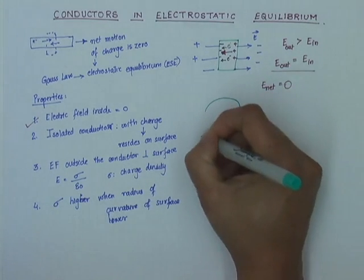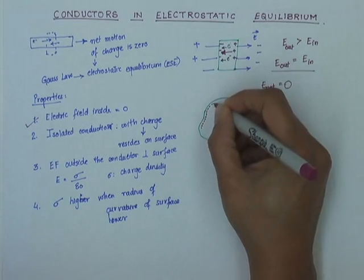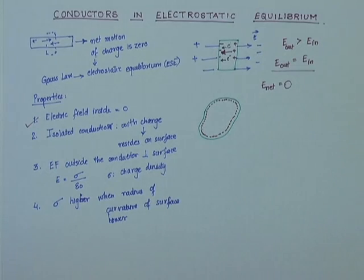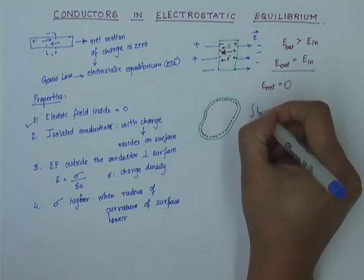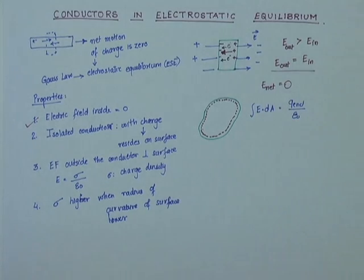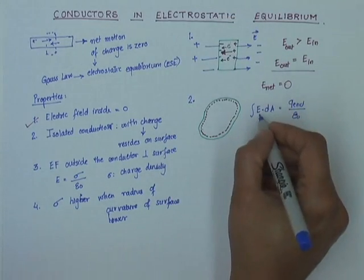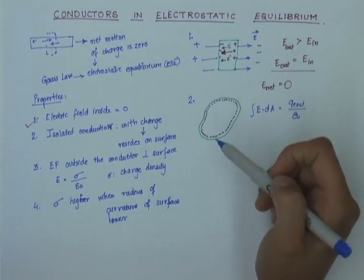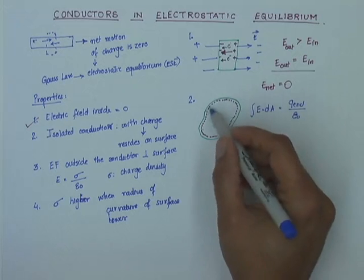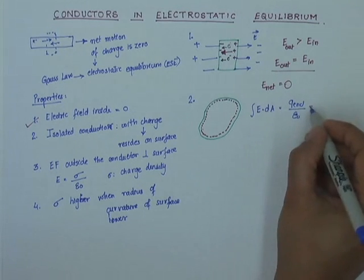I will pick a conductor — remember this is a 3D surface — and consider a Gaussian surface very close to the inner surface of the conductor. Applying Gauss law to this surface gives ∮E·dA = Q_enclosed/ε₀. However, we just established in property 1 that E anywhere inside the conductor is zero when it is in electrostatic equilibrium. So the surface integral of E over this Gaussian surface, which lies inside the conductor, is also zero — the flux is zero — giving Q_enclosed = 0.